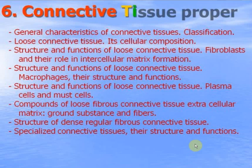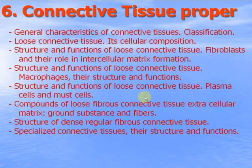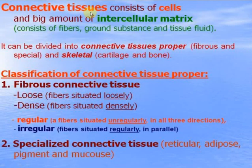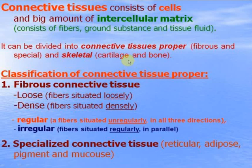Connective tissue proper. Connective tissues consist of cells and a large amount of intercellular matrix, which consists of fibers, ground substance, and tissue fluid. Connective tissues can be divided into connective tissue proper, fibrose and special, and skeletal — cartilage and bone.